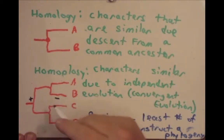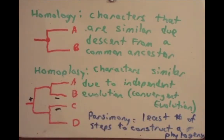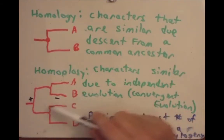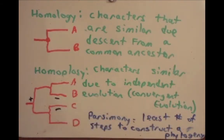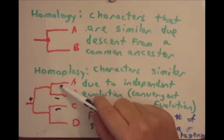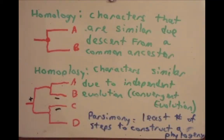We would have had to have lost the trait in one lineage because the trait was only in A and D. So in order for the trait to have been homologous, we would have needed three independent events, which is less likely than two independent convergent evolutionary events. Two independent evolutionary events is more likely than three.